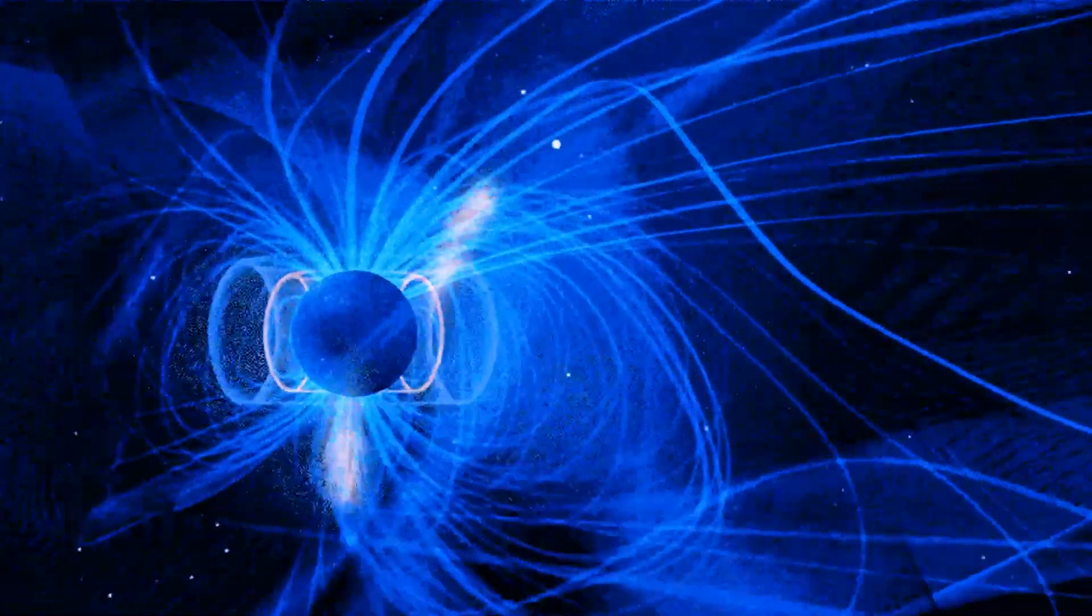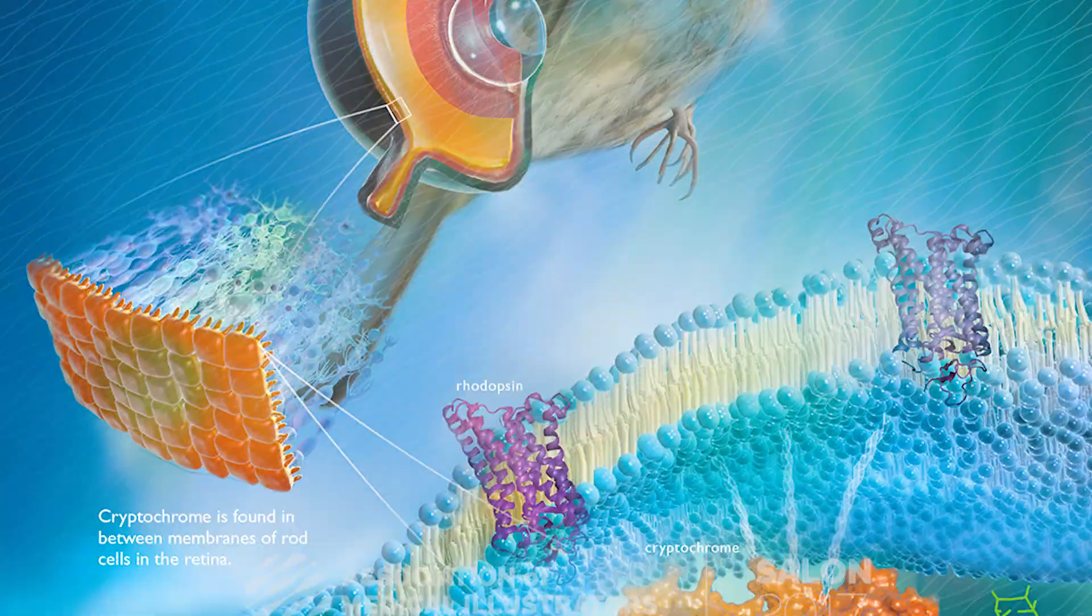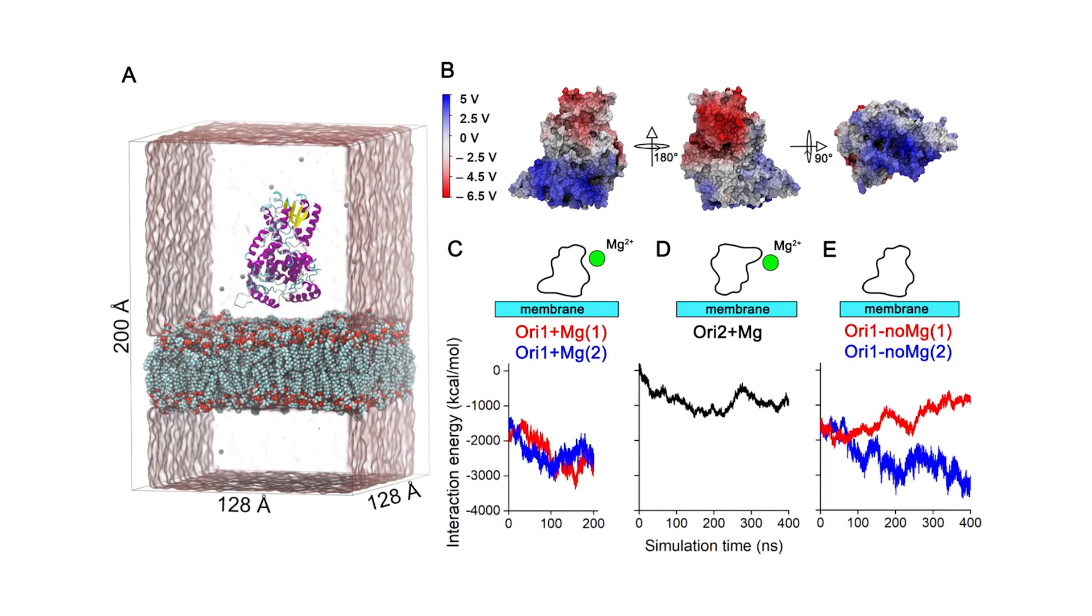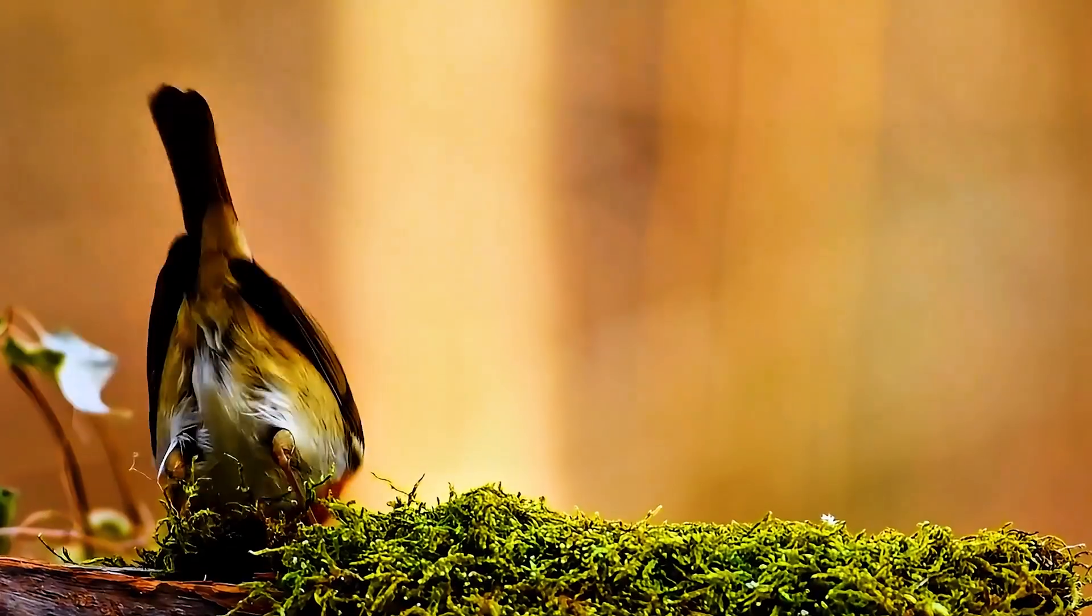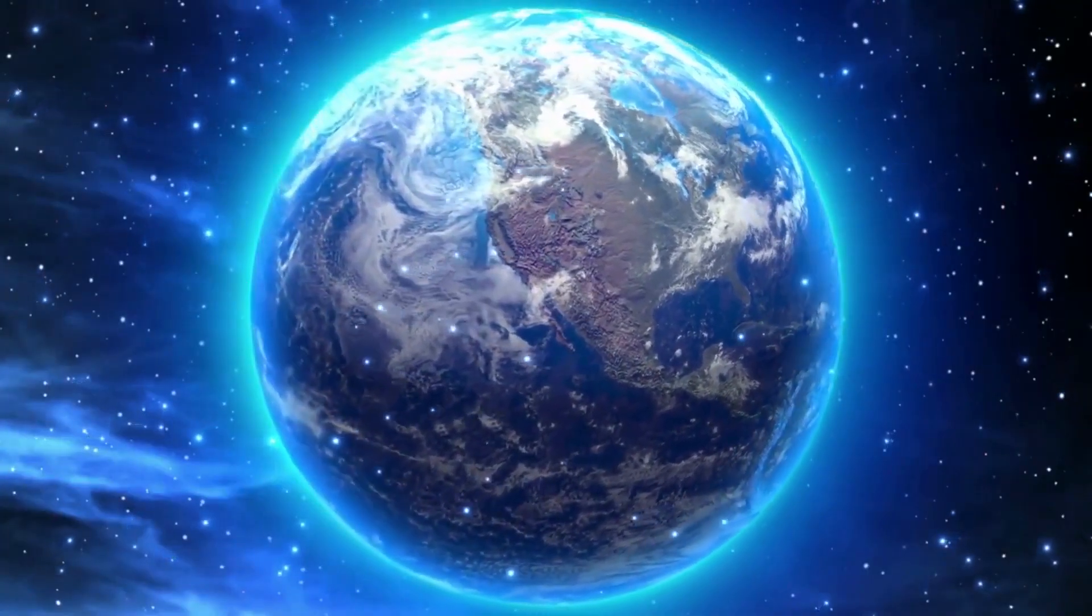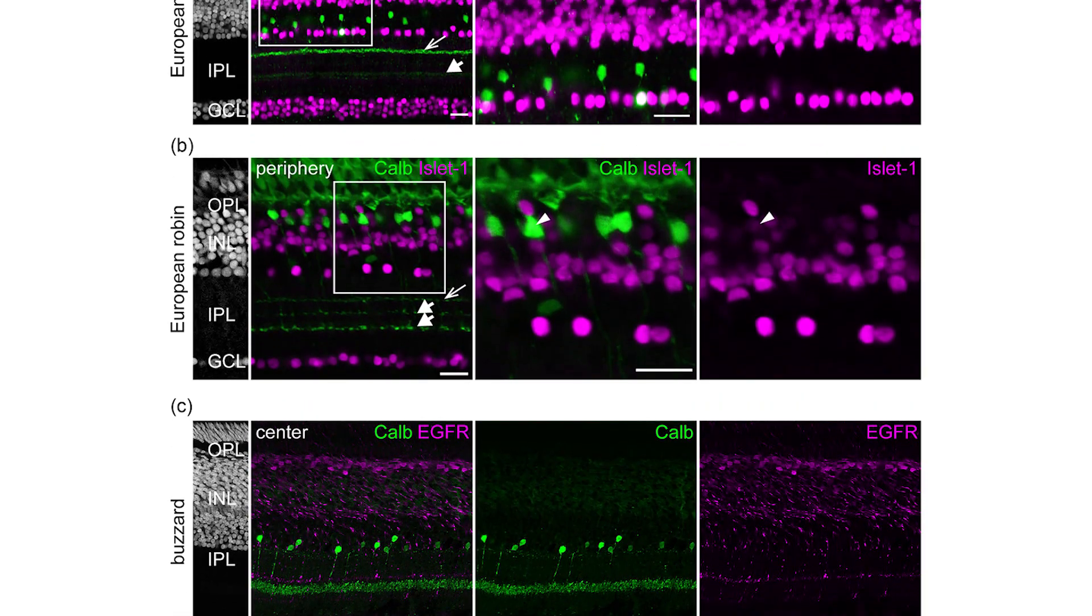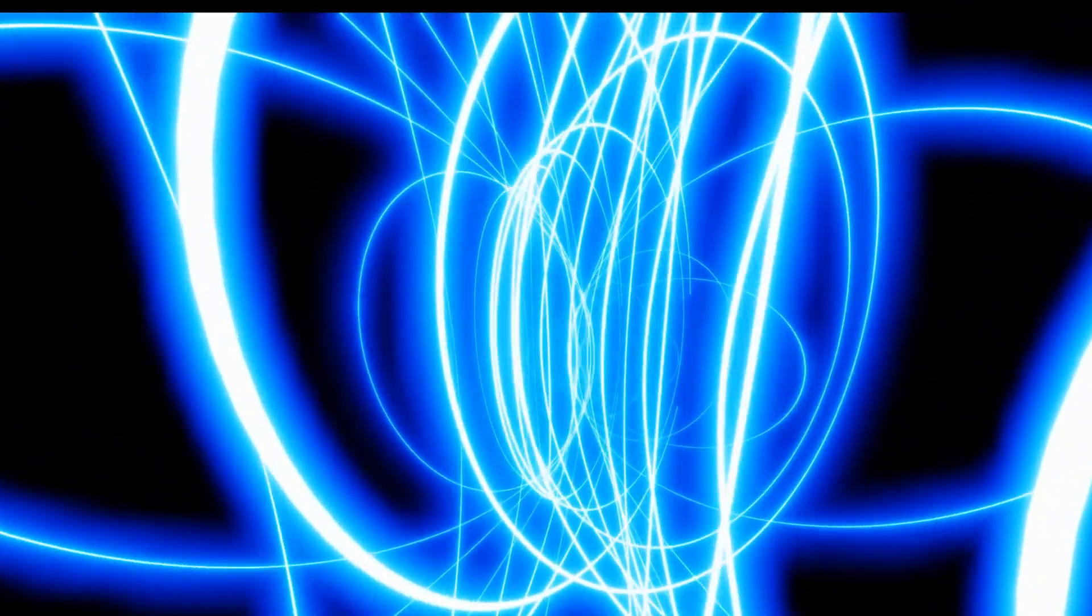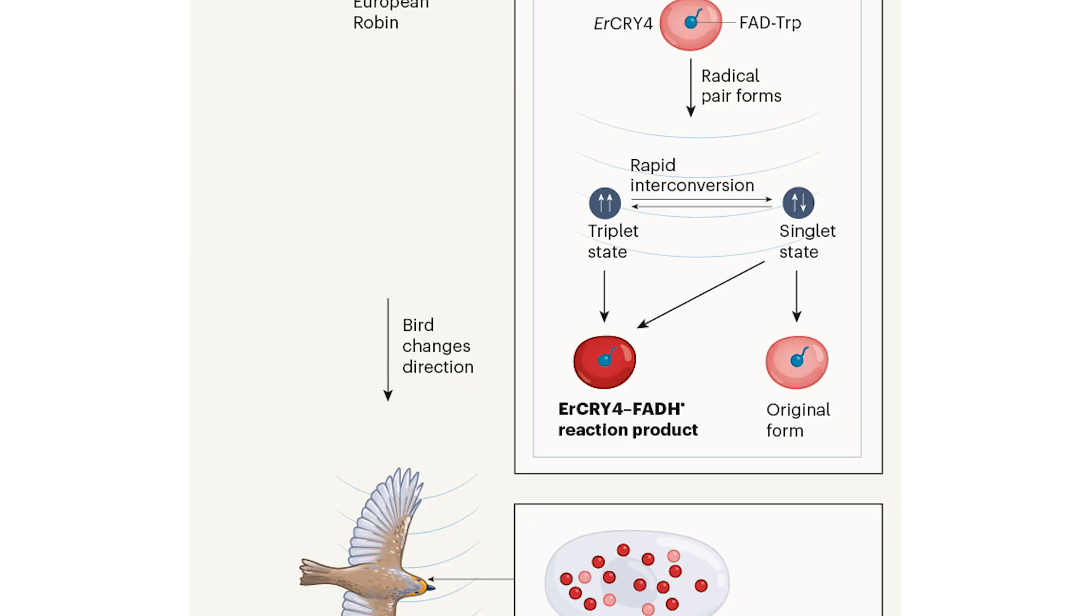Light excites an electron in the cryptochrome, which then transfers to another molecule, creating two radicals, each with an unpaired electron. These electrons maintain quantum entanglement despite being separated, and their spin states are influenced by Earth's magnetic field. The resulting chemical reactions differ depending on the orientation of the bird relative to Earth's magnetic field, effectively giving the bird a quantum compass.